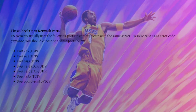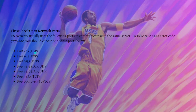Next, you can check and open the network ports. PS networks usually use specific ports to communicate with the game server. To solve the NBA 2K24 error code 727e66a6, you should open one of the required ports listed on screen — you can go ahead and pause the video to choose from the selection shown.